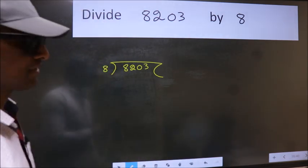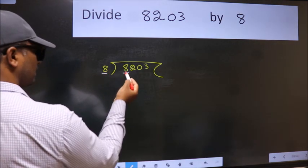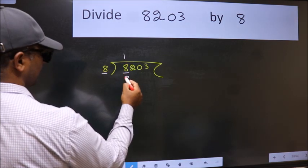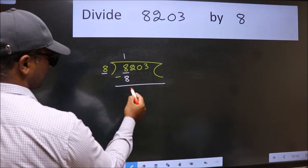Next, here we have 8 and here 8. When do we get 8 in the 8 table? 8 once 8. Now we should subtract. We get 0.